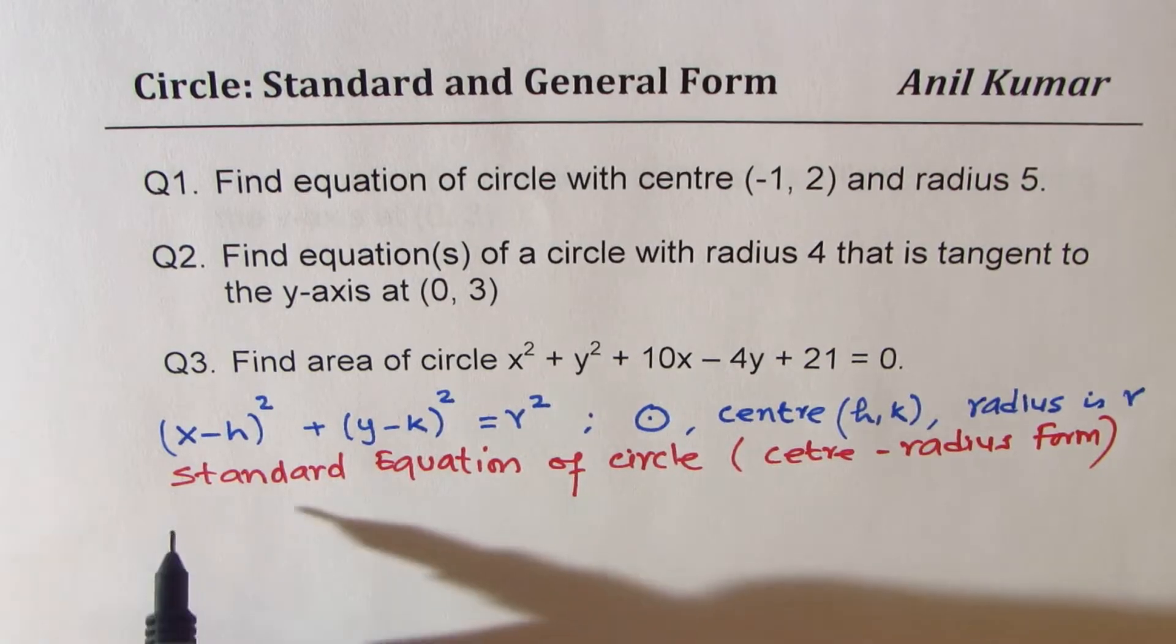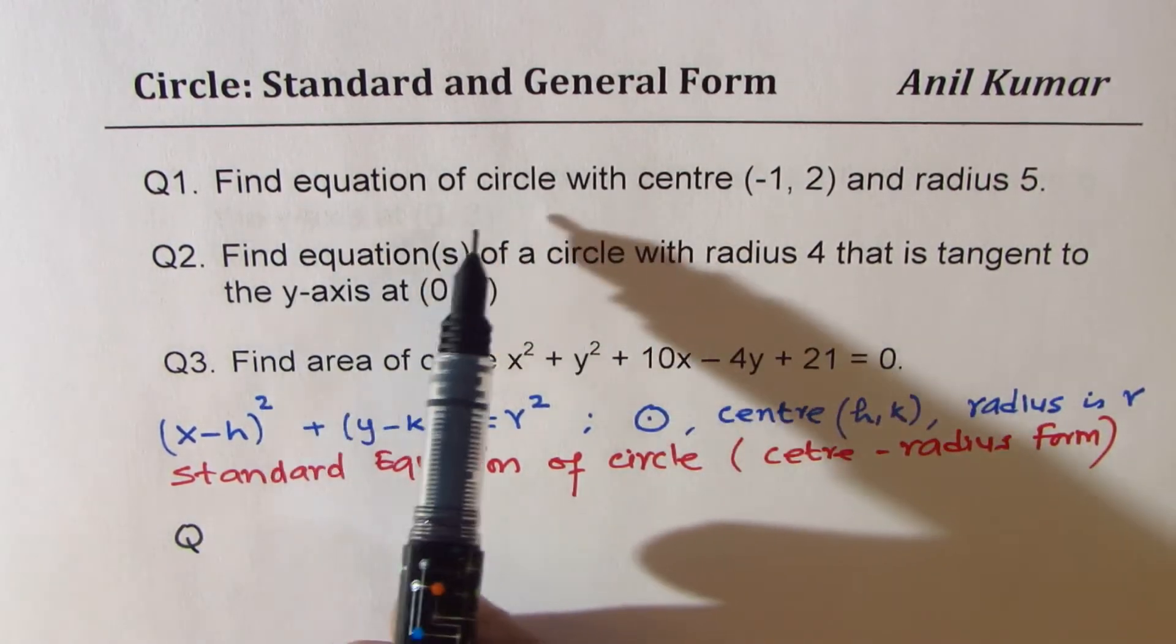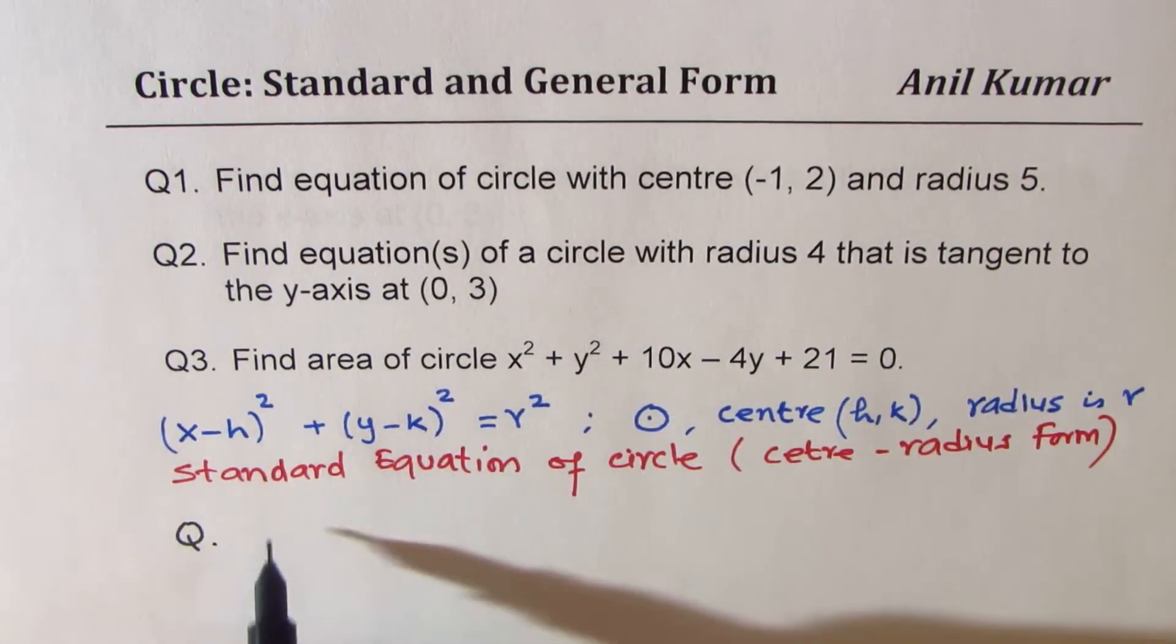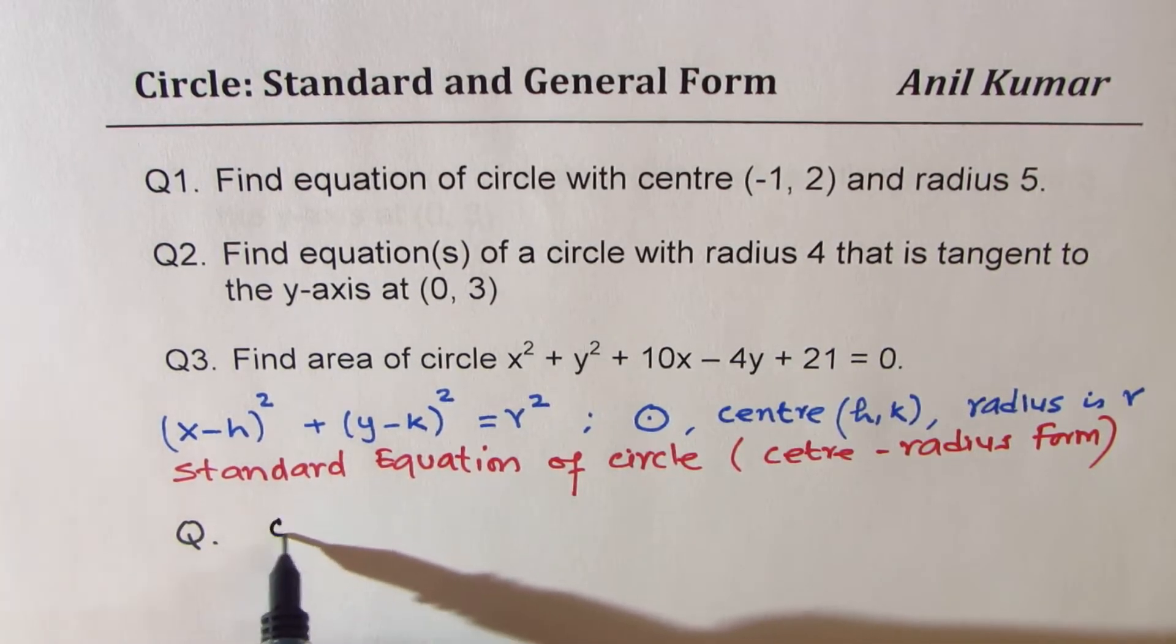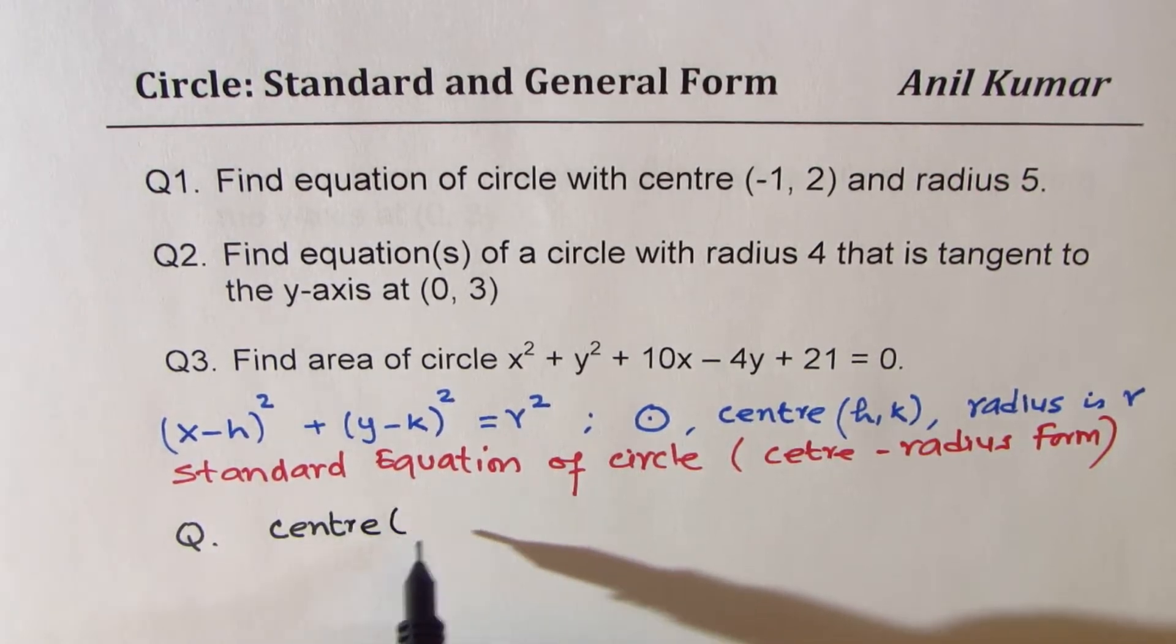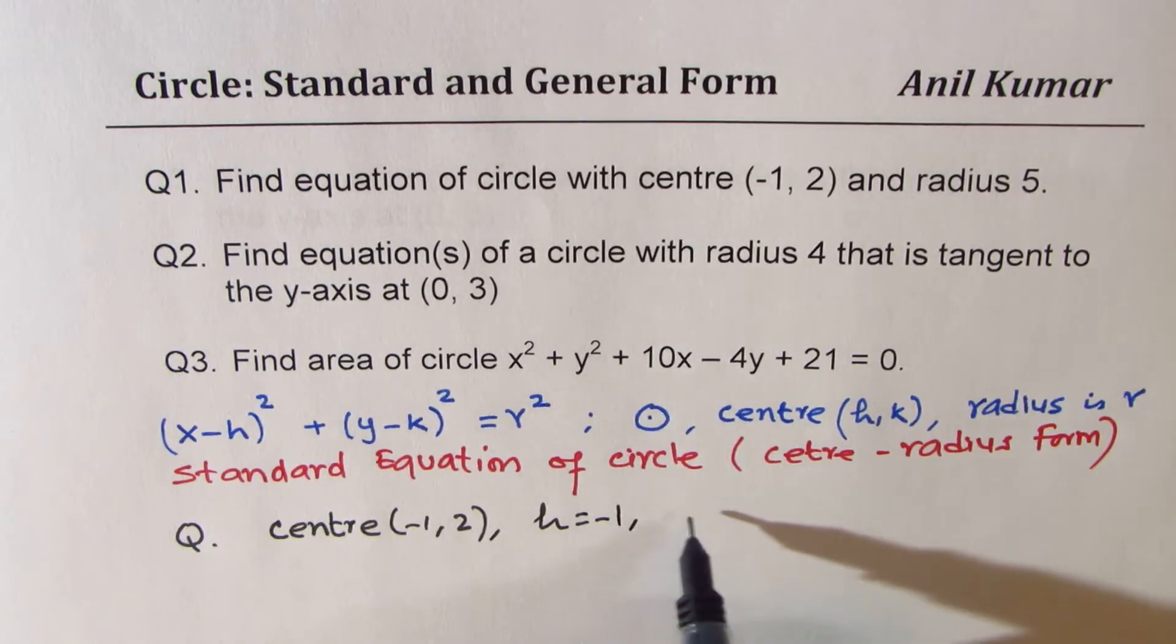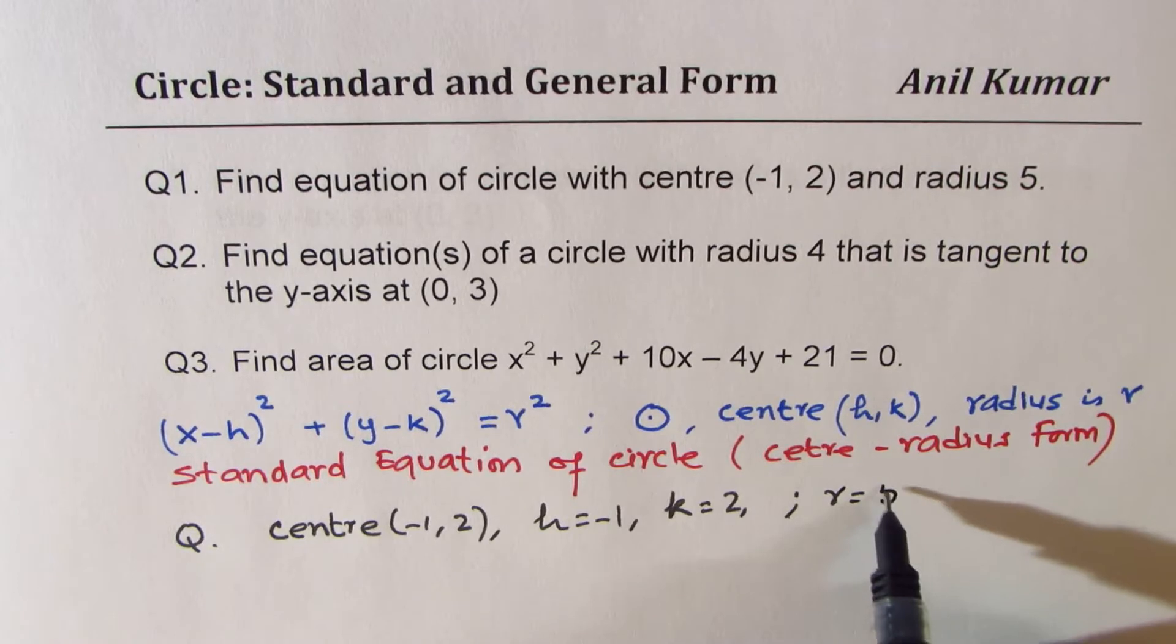Question number one: It is straightforward. We need to write the equation of circle with the given center and the radius. So in this case, we know what center is. The center is at (-1, 2). That means h = -1 and k = 2, and also we are given the radius as 5.